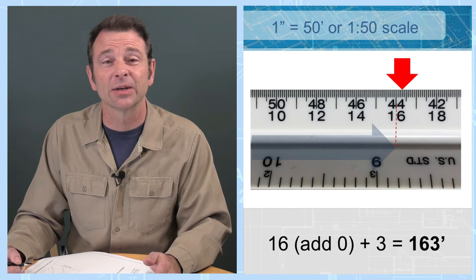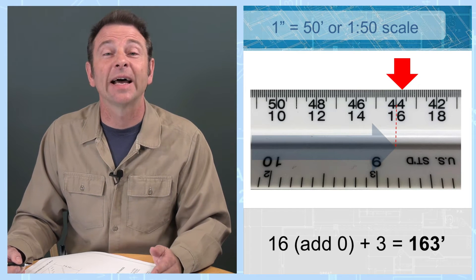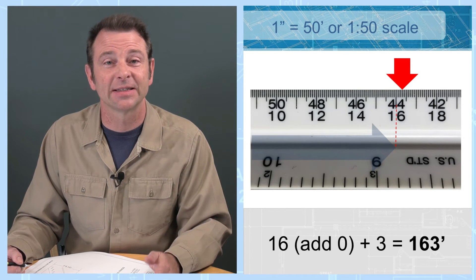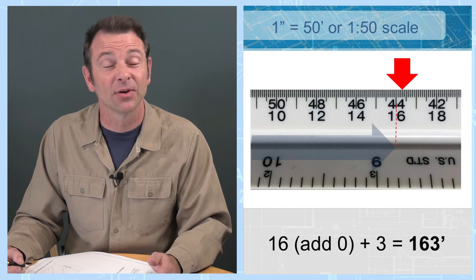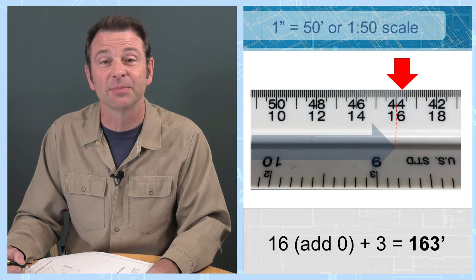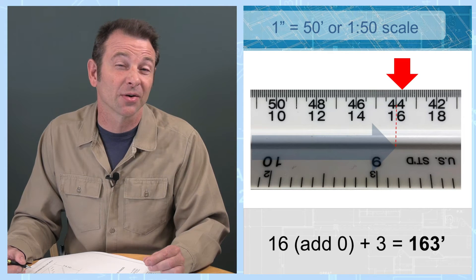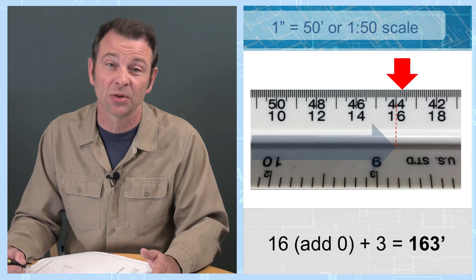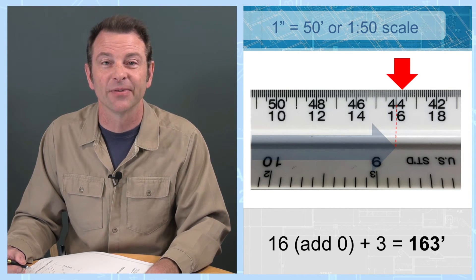Our last example is one inch equals 50 feet. Our last whole mark lands on 16. We'll add a zero to that, that makes it 160. And then we'll count up our marks beyond that. Our marks are going to be one, two, and three. That makes it a total of 163 feet.